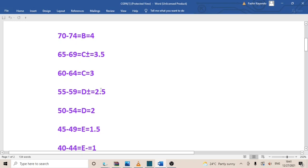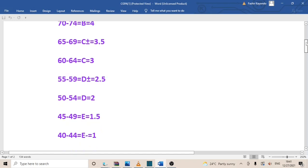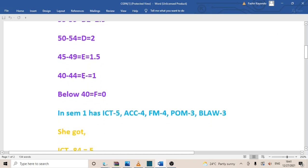60 to 64 is a C which is equal to 3. 55 to 59 is a D plus which is equal to 2.5. 50 to 54 is a D which is equal to 2. Then 45 to 49 is an E which is equal to 1.5. And then I'm having 40 to 44 which is equal to E minus, which is a 1. And below 40, that's F which is equal to zero.